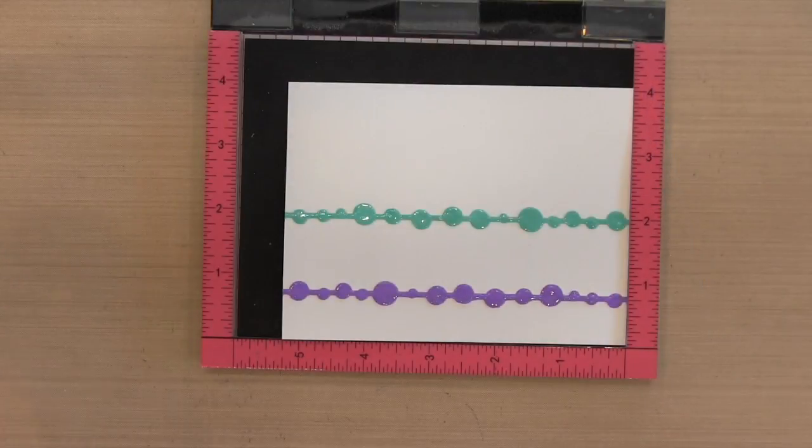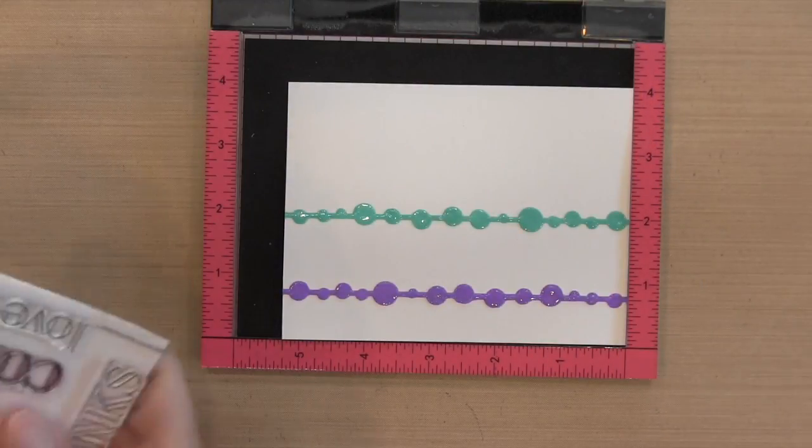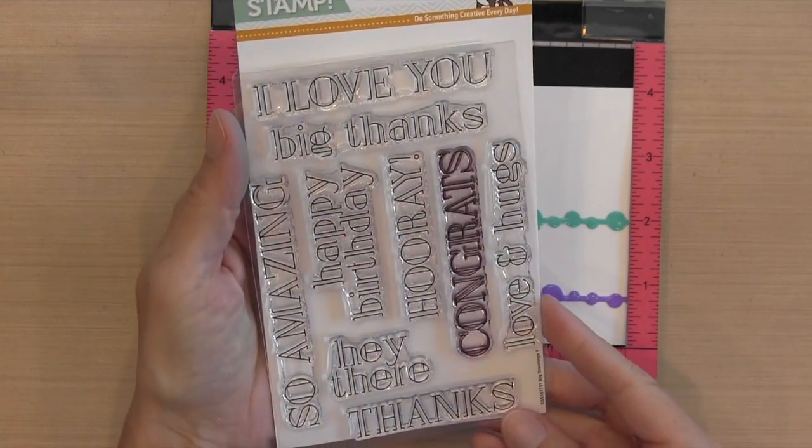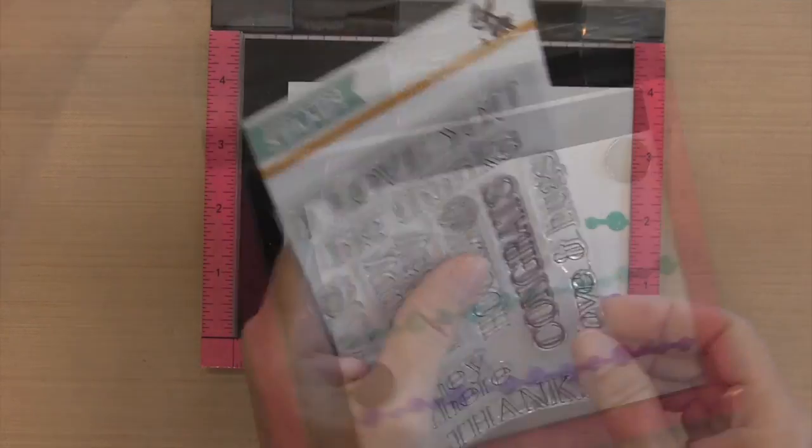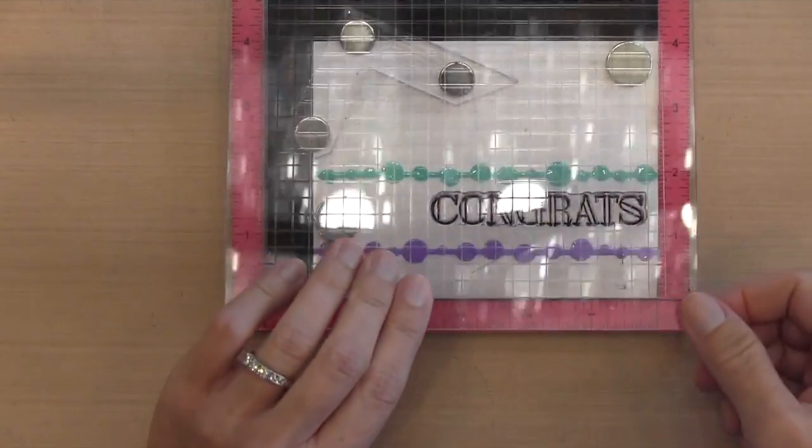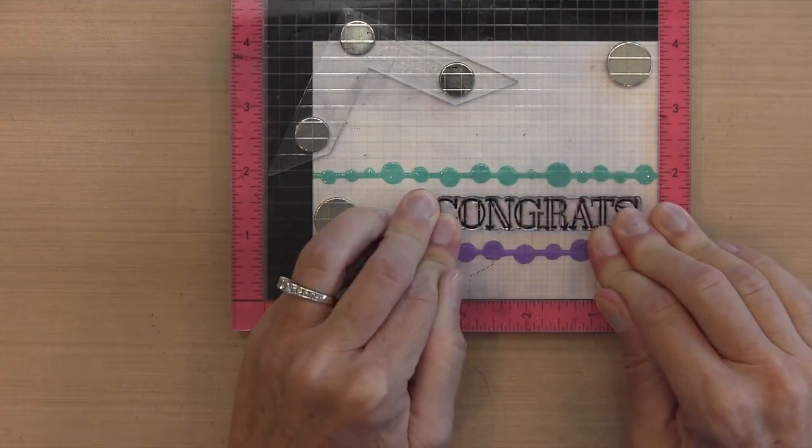I trimmed this to four by five and a quarter and I'm using this Big Greetings set by Simon Says Stamp. I put it in my MISTI. I'm going to put it right between those two lines.